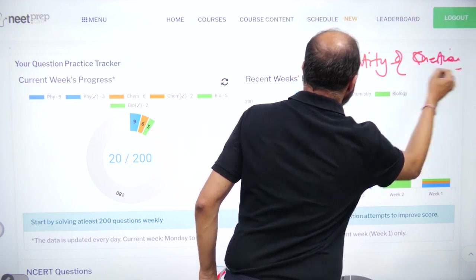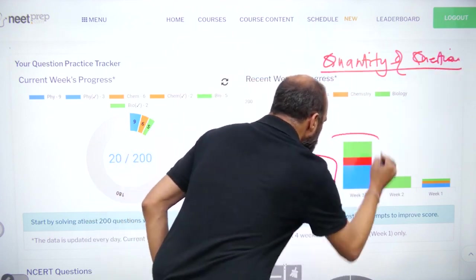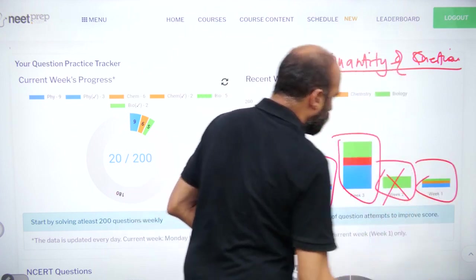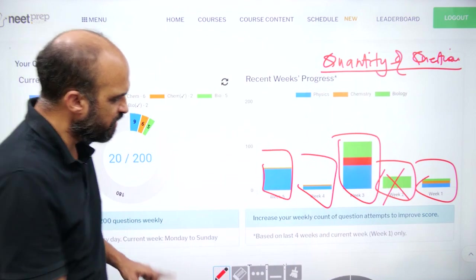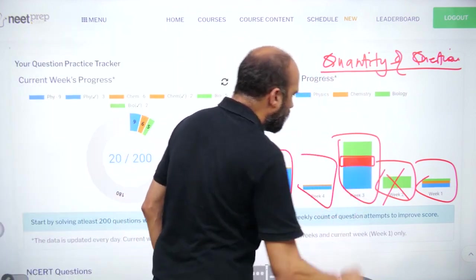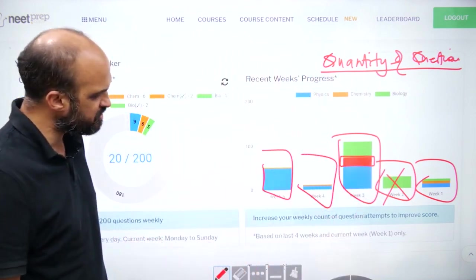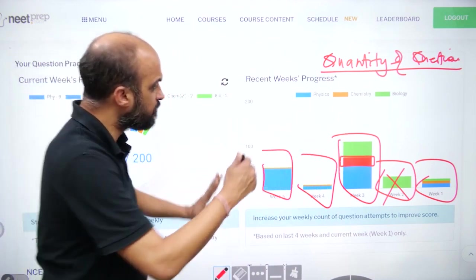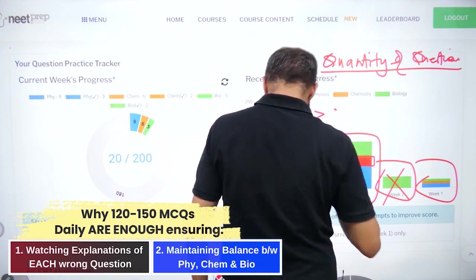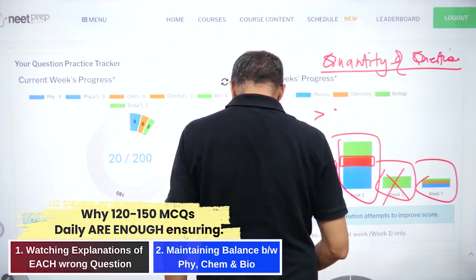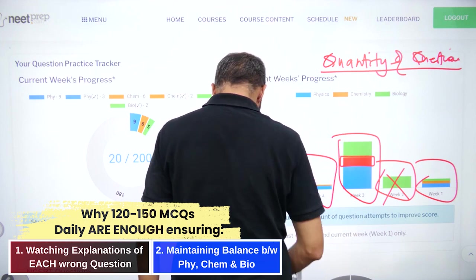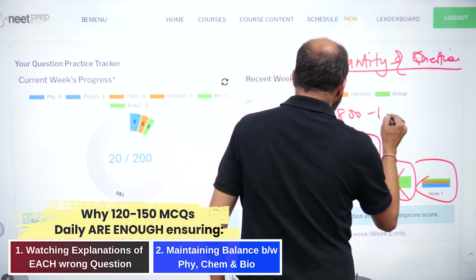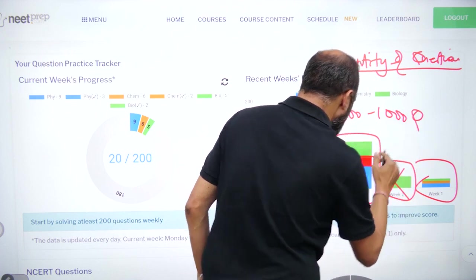So, what this shows is, for last five weeks, how many questions you have practiced. Very good. Like this week is bad because you only practice bio questions. This becomes red if for every chapter you have not practiced at least 20% questions. So, this is telling you how many questions you have practiced in last five weeks. This number has to be approximately. I should not write greater. Otherwise, you guys are going to go berserk. I should say 800 to 1000 questions per week. Right? With the right balance of,